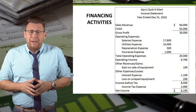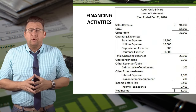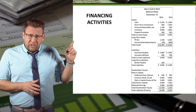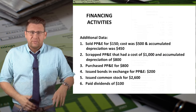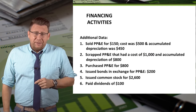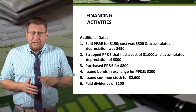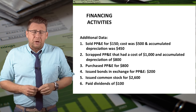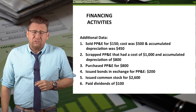Let's use the example of Apu's Quickie Mart. Here's the income statement we will reference, and here's the comparative balance sheet showing the years 2015 and 2016, along with some additional financial data. Many assignments will provide this information, but I'll show you how to calculate it in case you encounter a problem that doesn't present all the pertinent financial data needed.